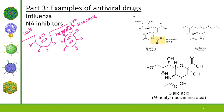We have two common neuraminidase inhibitors to discuss: Relenza and Tamiflu. Looking at their structures, both look very similar to sialic acid. Here is the structure of sialic acid; on the right is Tamiflu, and on the left is Relenza. You can probably notice that Relenza is more structurally similar to sialic acid — and that becomes very important.